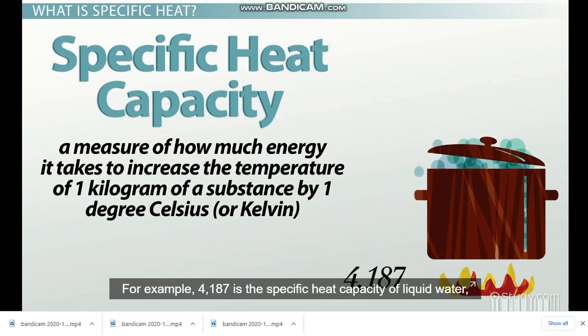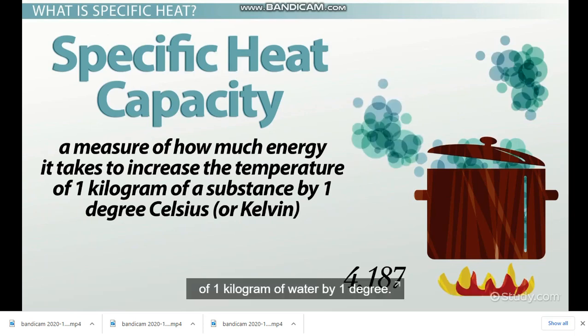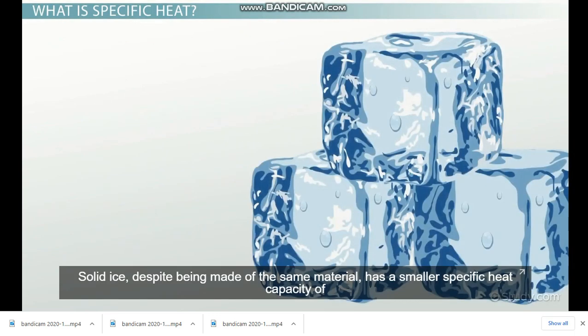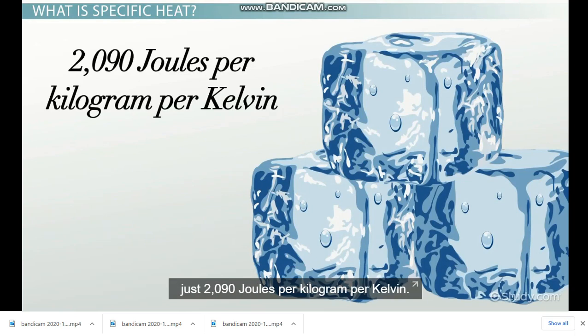For example, 4187 is the specific heat capacity of liquid water, and this means that it takes 4187 joules of energy to increase the temperature of one kilogram of water by one degree. Solid ice, despite being made of the same material, has a smaller specific heat capacity of just 2090 joules per kilogram per Kelvin, so the state of a substance also matters.